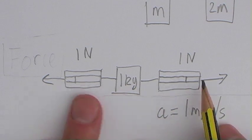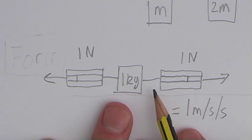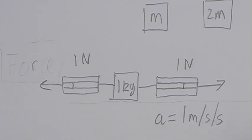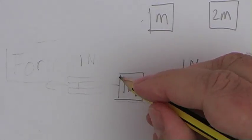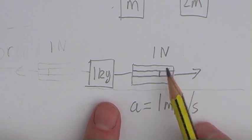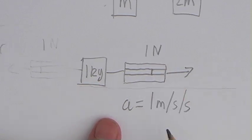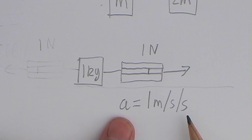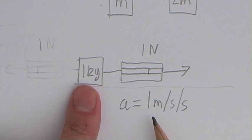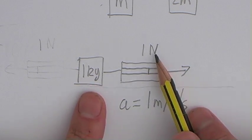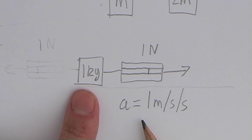So forces can cancel each other out. If something's not accelerating, either there's no forces acting on it at all or the forces acting on it are completely balanced. Now suppose I just go back to this situation where you've got an unbalanced force acting on this mass. If I was to double the force to two Newtons, I'd double the acceleration — it'd become two metres per second per second. If I was to double the mass, I would halve the acceleration.